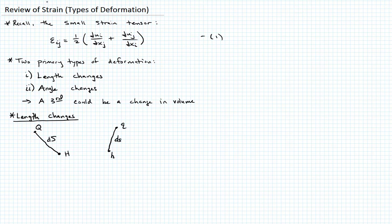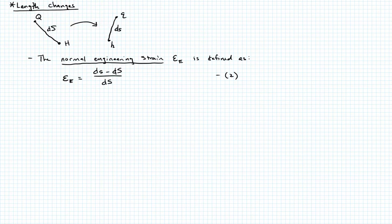Then after some deformation, let's say we have now a new H and a new Q, and the distance between that line is D little s. Pretty simple. Under some deformation, that line moved. It changed the orientation but it also changed its length. We'll give a definition of normal engineering strain, epsilon E. The normal engineering strain epsilon E is defined as epsilon E equals D little s minus D big S divided by D big S. That's delta L over L. Let's call that equation two.